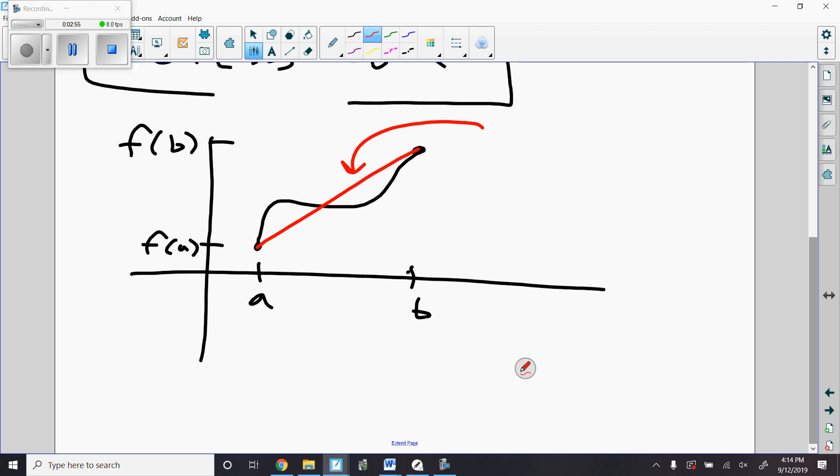So this slope, this line right here, the slope of that line is f(b) minus f(a), change in y, f(b) minus f(a) over change in x, b minus a. And that slope is the average rate of change.